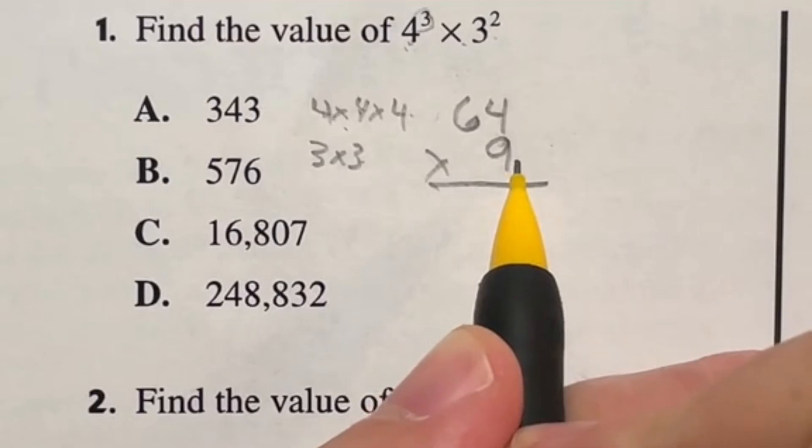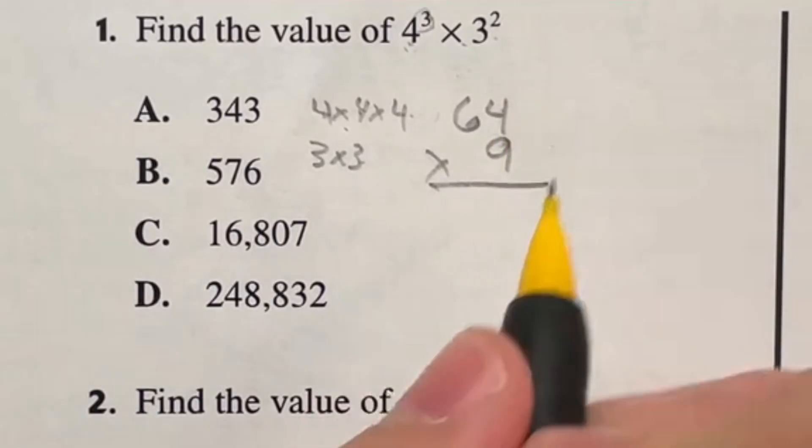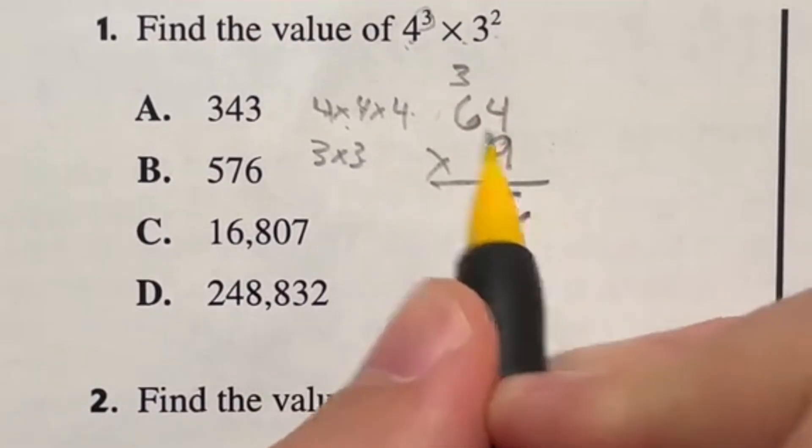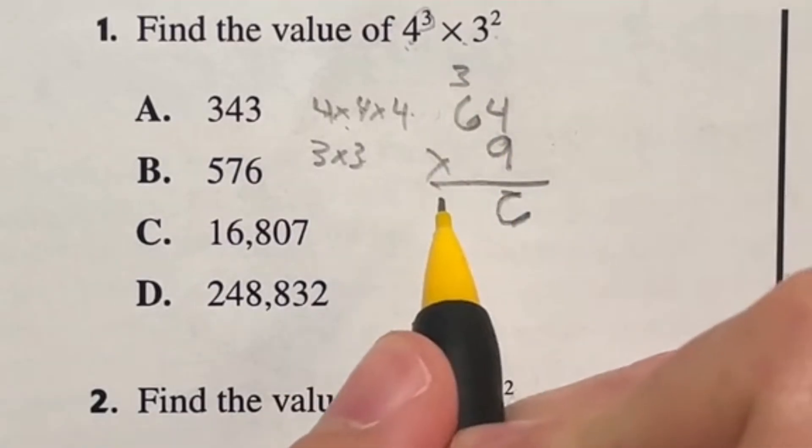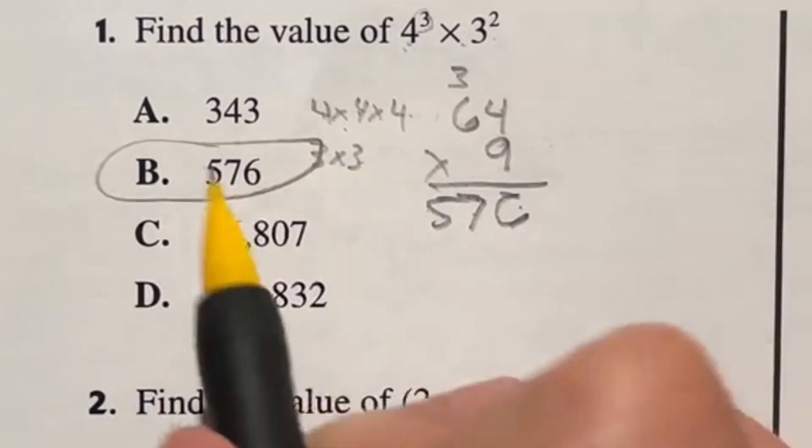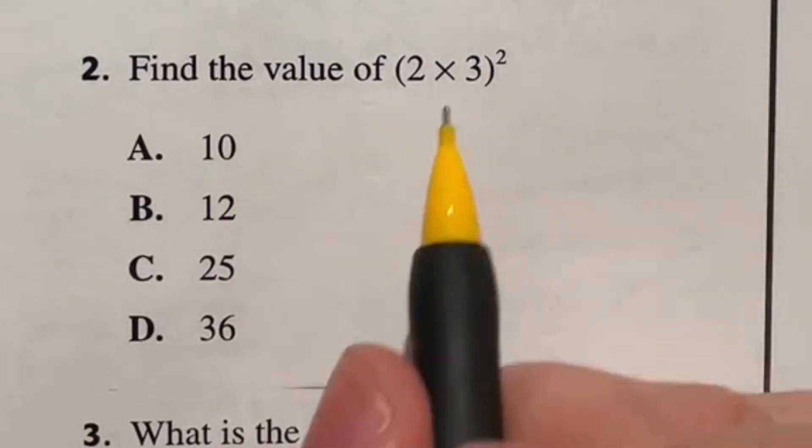So now we've got to multiply those two together. Remember no calculator here. Nine times four is going to give us 36 and nine times six is going to end up giving us 54 plus three is going to give us 57. So the final answer is 576, which is answer B.